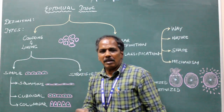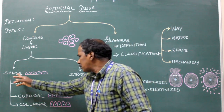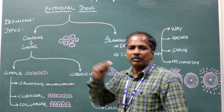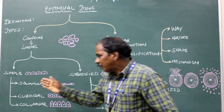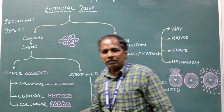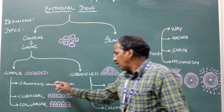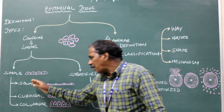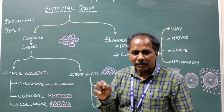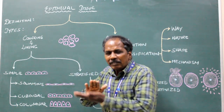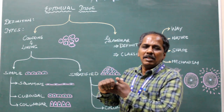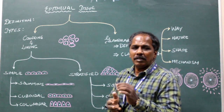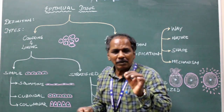Simple epithelium is again divided into simple squamous, simple cuboidal, and simple columnar epithelium. Simple squamous epithelium: simple means single layer, squamous means flat. So simple squamous epithelium consists of a single layer of flat epithelial cells. Examples are very important.